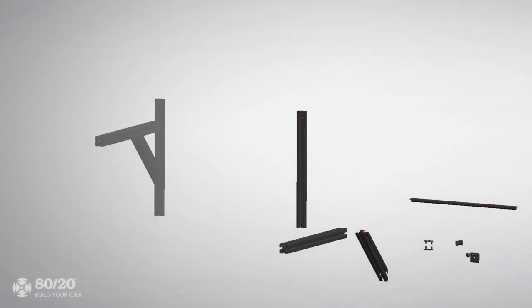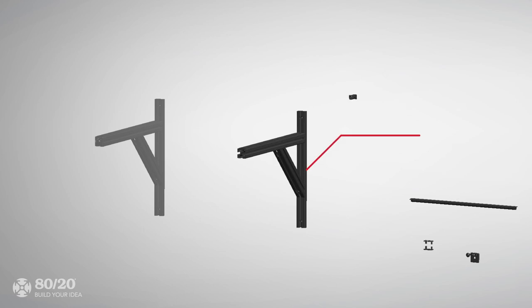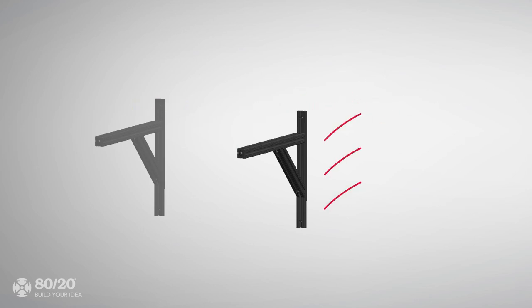To start the build, we'll connect profile A and the 45 degree support. From there, we'll attach both profile B using the anchor fastener on profile A. To finish the tube rack, we'll add end caps. Then we'll give the rack some grip by adding tread strip to the top of profile A. And finally, we'll mount the rack to the wall stud in the desired location.